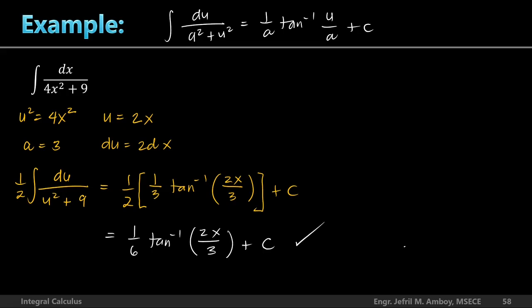The final answer is (1/6) tan⁻¹(2x/3) plus C. Very simple! Anyone who says integral calculus is hard is wrong — it's easy when you know the formulas.